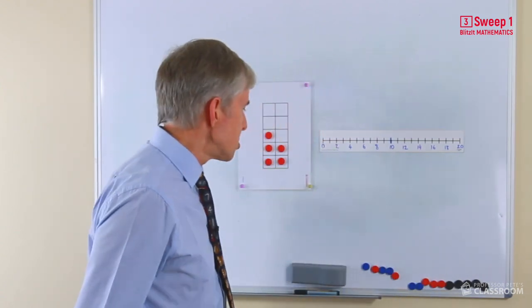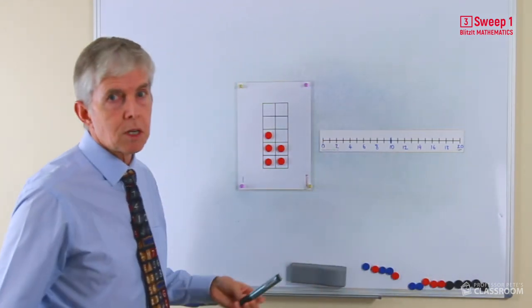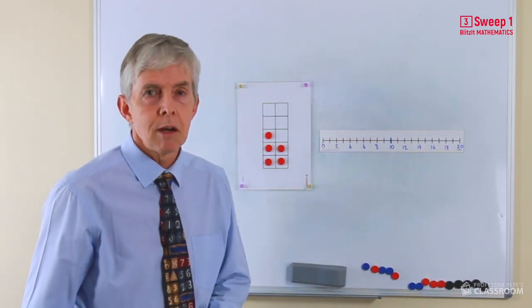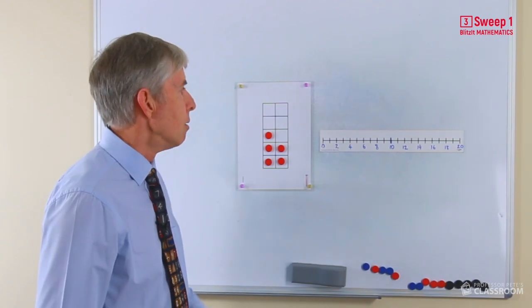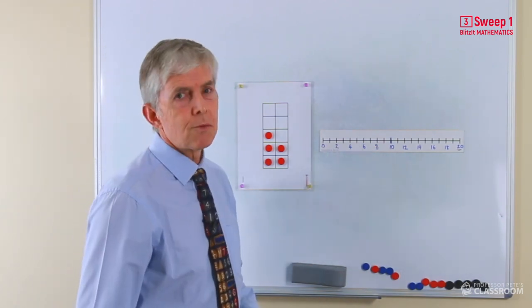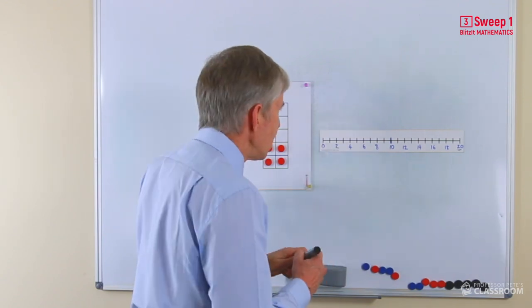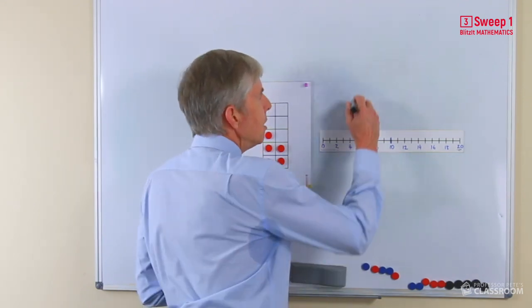So counting on one and two, as I said we're doing this first because it's the easiest strategy, it's based on the sequence of counting numbers which students already know. Using a number line it's very easy to talk about this, this is a very small number line so I haven't actually written all the numbers in but if we had an example like six plus one we could show that on the number line.